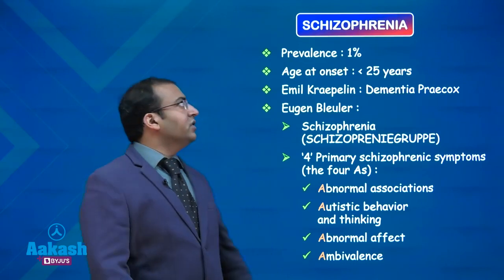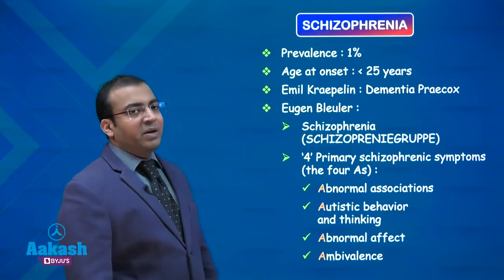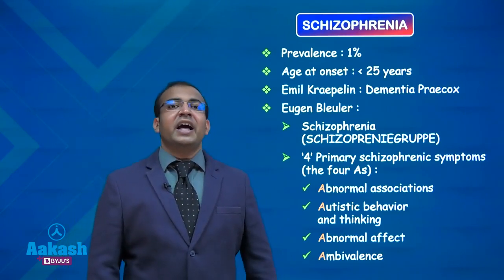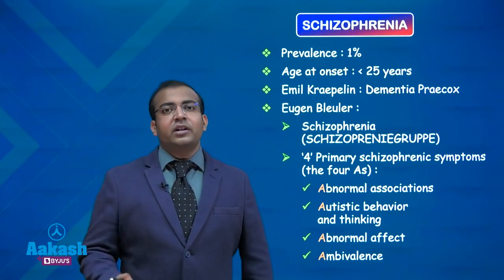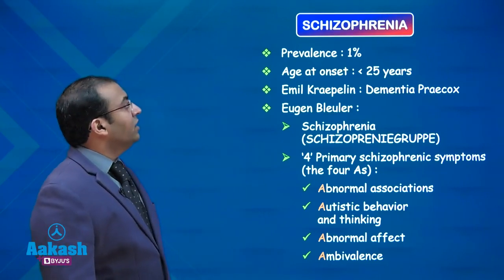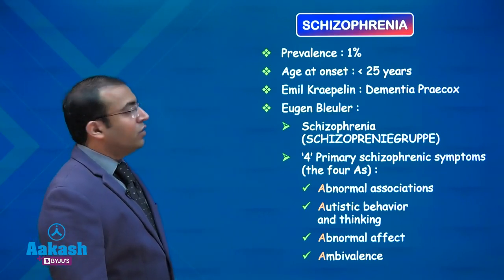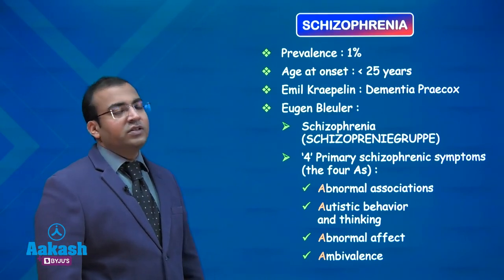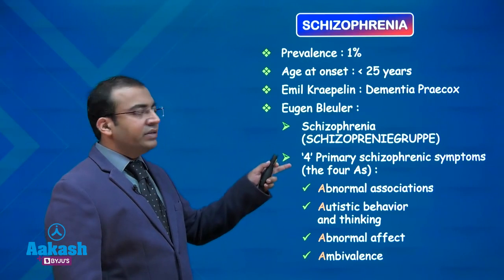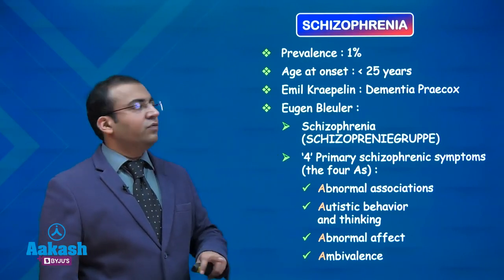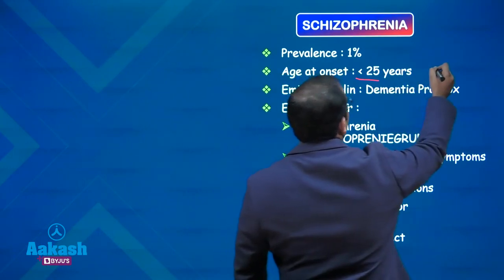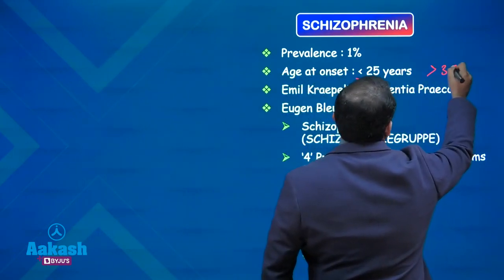The first one off the list is schizophrenia. Schizophrenia has a prevalence of 1%, with around 20 million people actively living with this disease. The onset age has two peaks: one earlier than 25 years and the other after 35 years of age, so the usual age of onset can be less than 25 or more than 35 years.